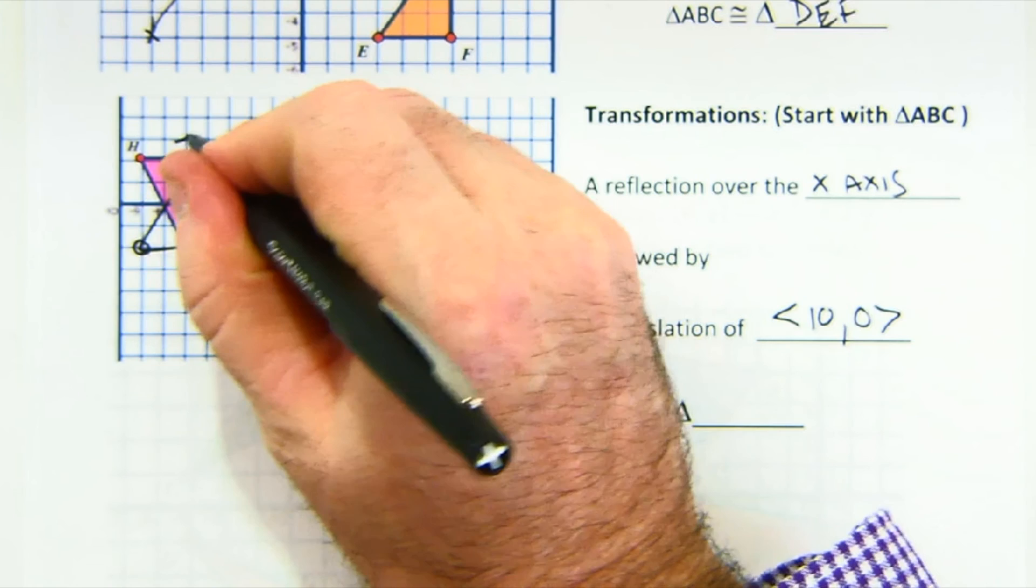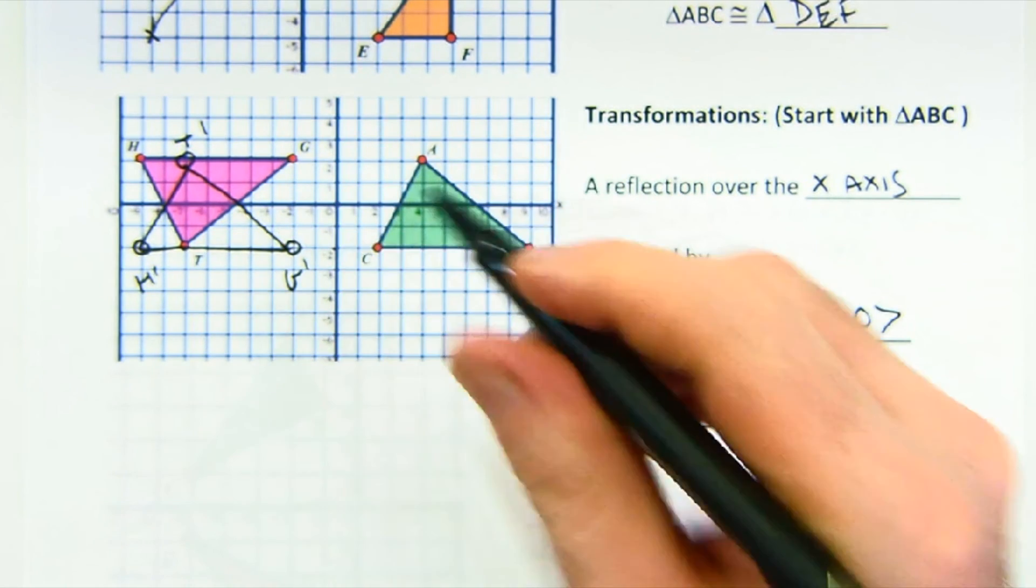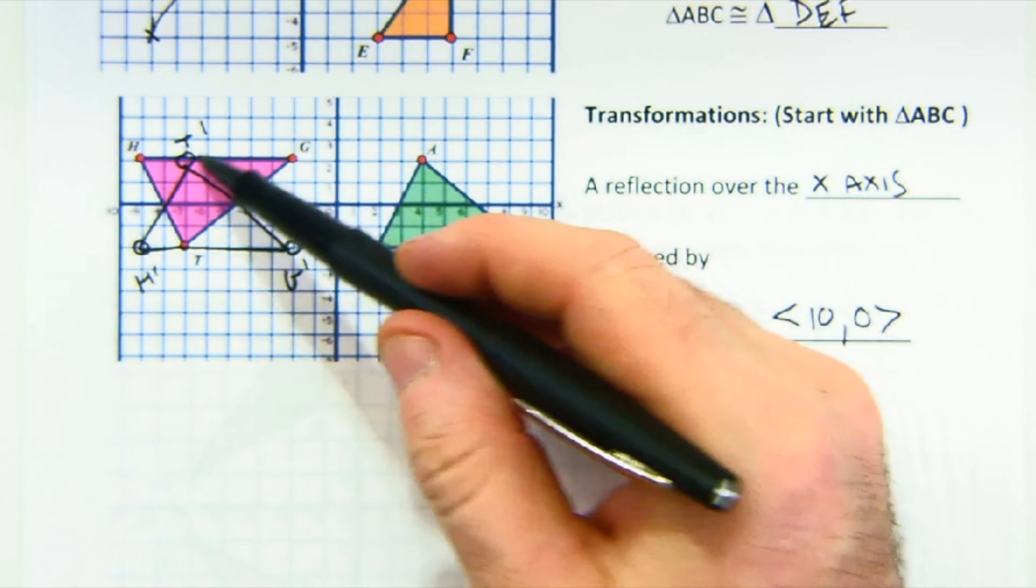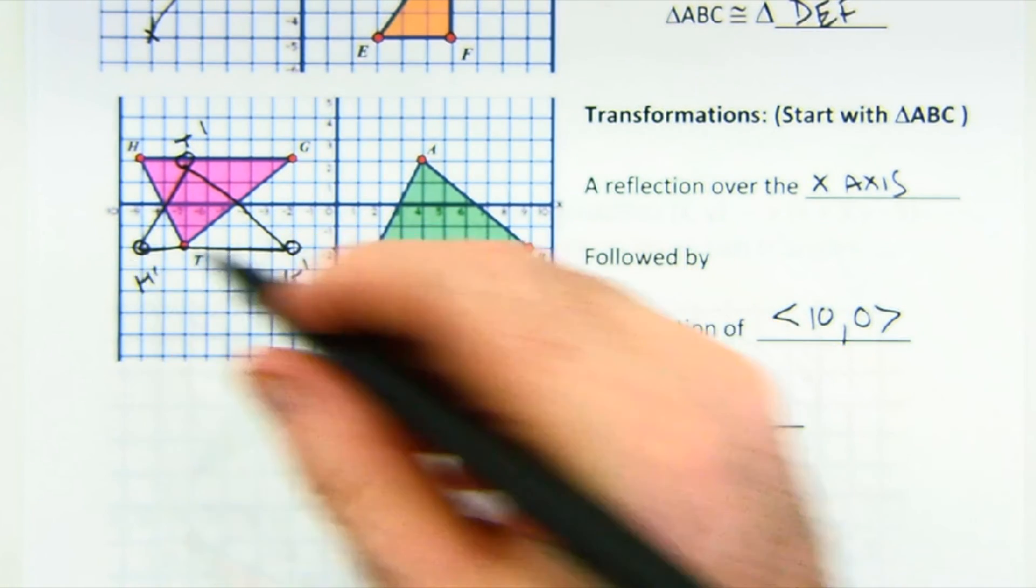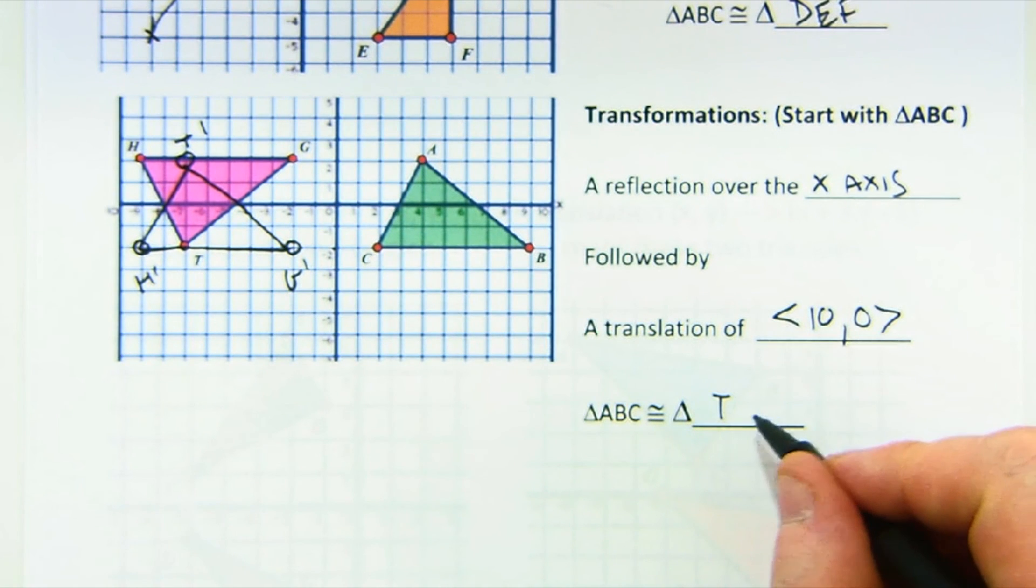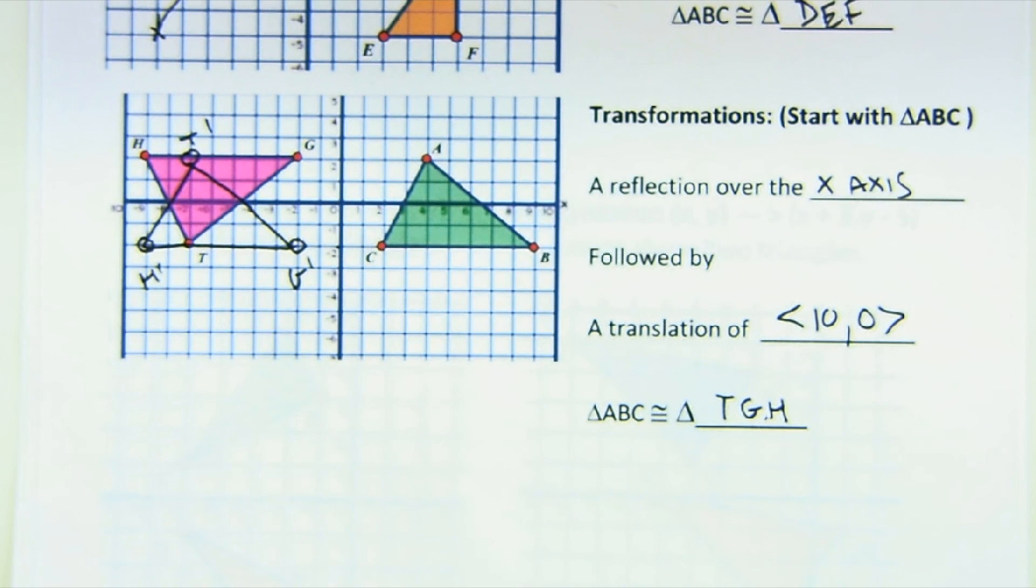Now, of course, this T would be here at T prime, H would be here, H prime, G would be here, G prime. So the A is going to match up to RT, RC is matching with the H, and RB is matching with the G, just like this. A very nice definition of congruence and fairly easy to understand.